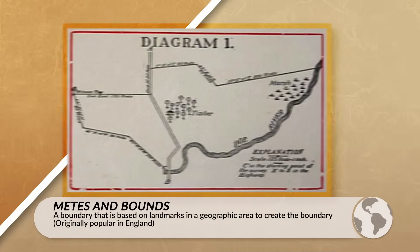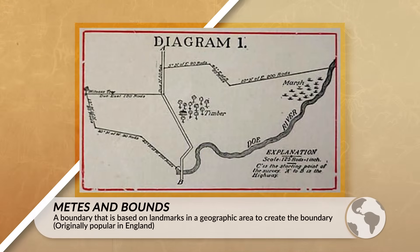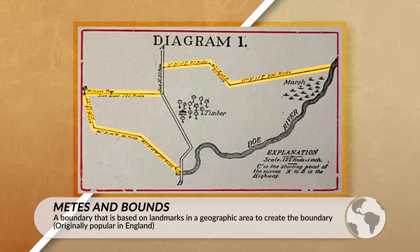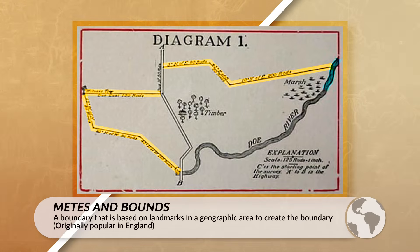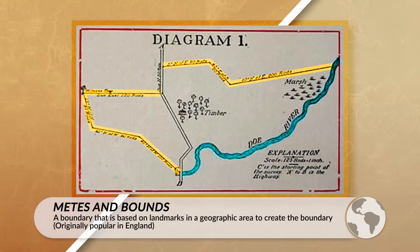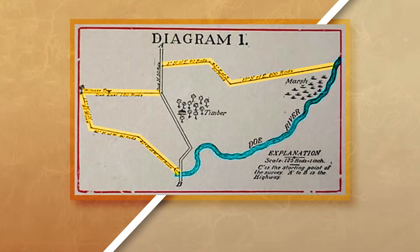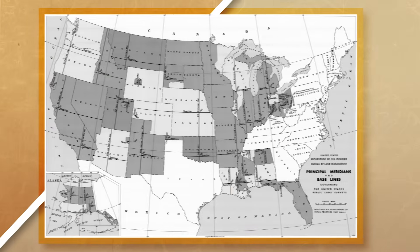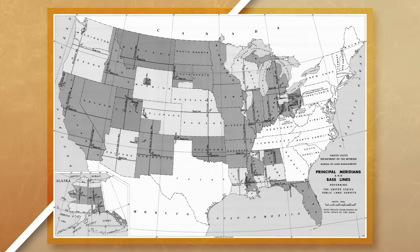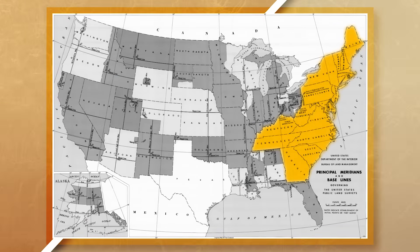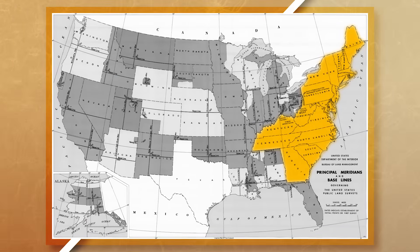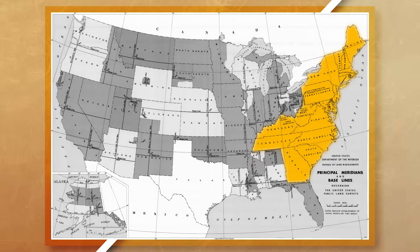Up next, we have metes and bounds. Metes are often straight lines that connect different parts of a geographic area, where the bounds are key geographic features that define an area. This survey method is often used for short distances and relies on key features of a place. In the United States, we find metes and bounds used more frequently on the east coast, where Europeans first settled.